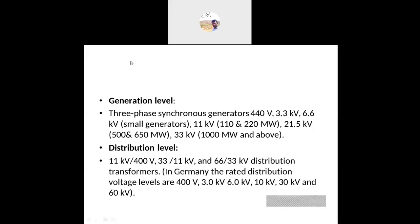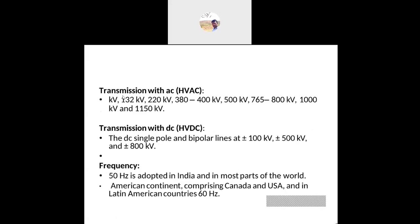Now coming to the distribution level — 11 kV to 400 volts, 33 kV to 11 kV, and 66 kV to 33 kV. These are the distribution levels. In other countries the voltage levels are 400 volts, 3 kV, 6 kV, 10 kV, 30 kV, and 60 kV based on their appliances and electrical equipment.